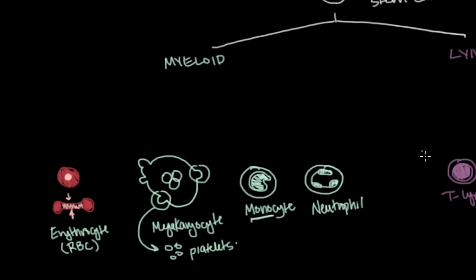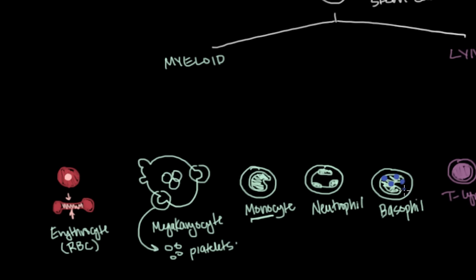So what are the other types of myeloid cells? Well, we have this one cell that's called a basophil. It looks something like a monocyte, except this cell has a very unique feature that the monocyte doesn't have — it has these bright blue granules in its cell's cytoplasm that make it stick out. The way I like to think of a basophil is like a blueberry muffin, which reminds me that it has these bright blue granules in its cell's cytoplasm.